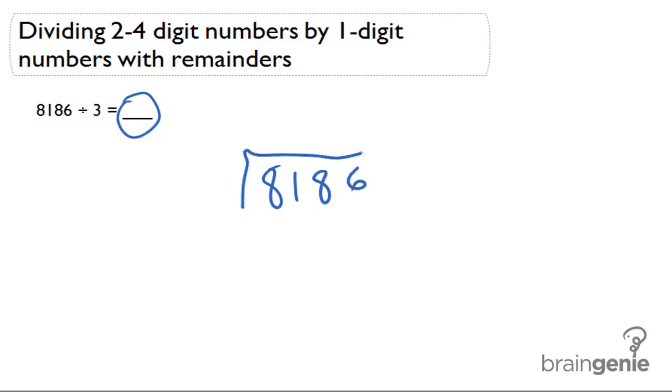8,186 divided by 3. So 3 goes into 8 how many times? 2 times. 2 times 3 is 6. We subtract that and get 8 minus 6 is 2. Then we bring down the 1.